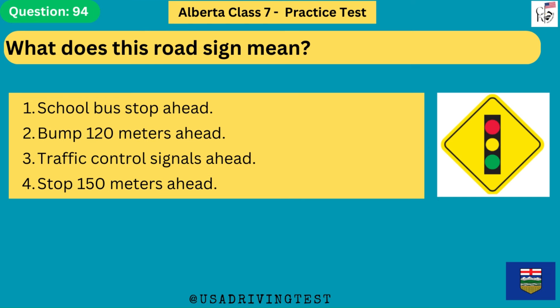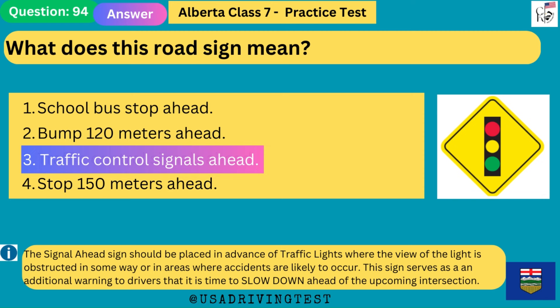What does this road sign mean? 1. School bus stop ahead. 2. Bump 120 meters ahead. 3. Traffic control signals ahead. 4. Stop 150 meters ahead. The answer is 3: traffic control signals ahead. The signal ahead sign should be placed in advance of traffic lights where the view of the light is obstructed or in areas where accidents are likely to occur. This sign serves as an additional warning to drivers to slow down ahead of the upcoming intersection.